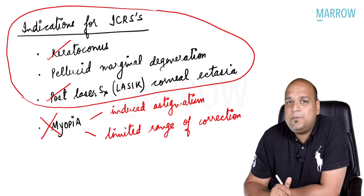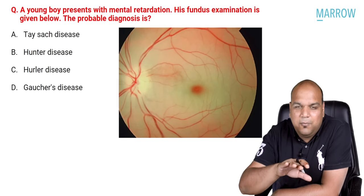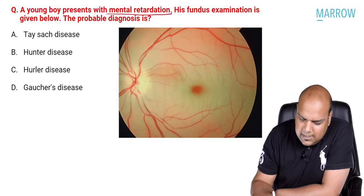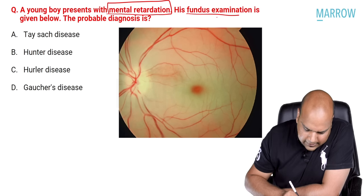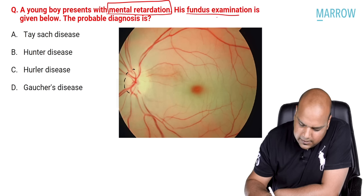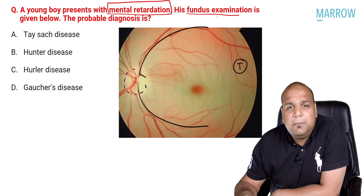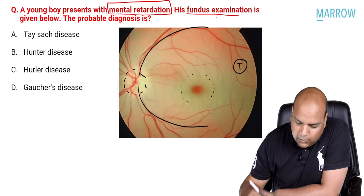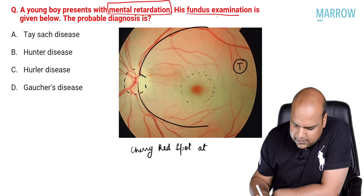Moving on to the last question asked in NEET PG 2022 — a question bridging ophthalmology and biochemistry. A young boy presents with mental retardation. On fundus examination, we can identify the optic disc, blood vessels arcing temporally, and at the macula — a cherry red spot. That is the diagnosis: cherry red spot at the macula.